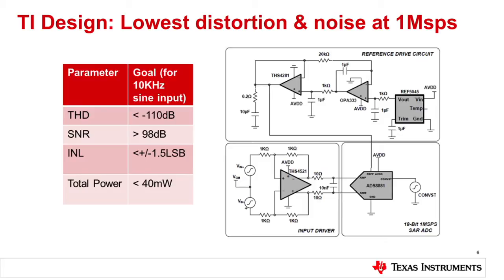The first parameter we're targeting is THD — total harmonic distortion — we're going to try to get better than 110 dB. SNR likewise, better than 98 dB. For INL, we're going to try to get below 1.5 LSB, which is adequate for this type of application. Total power, we're going to try to keep under 40 milliwatts — that's the goal, and we'll see if we can achieve that by the end of this video.